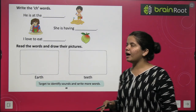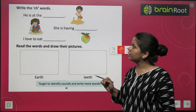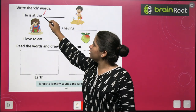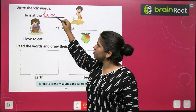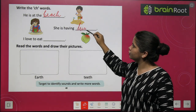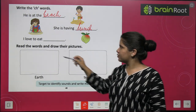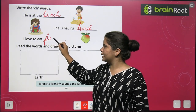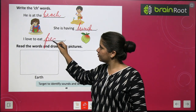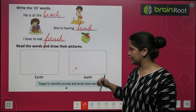You have to write the CH words again. He is at the beach. She is having lunch. I love to eat peach — P-E-A-C-H. The word ends in CH: peach.